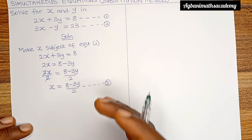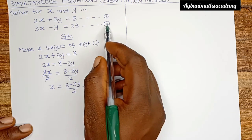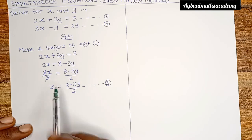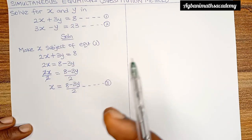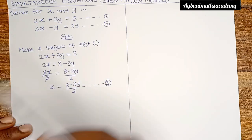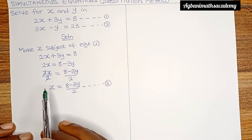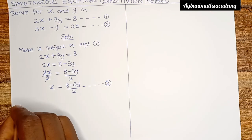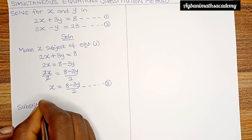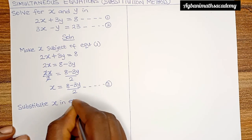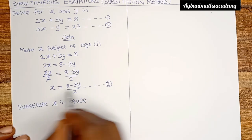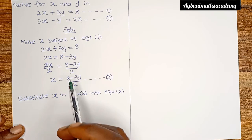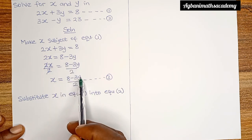The next thing we are going to do is substitute this value of x into equation 2. It is very important to note: we made x the subject in equation 1, therefore we substitute into equation 2. If we had made x the subject in equation 2, we would substitute into equation 1. Since we made x the subject in equation 1, we substitute into equation 2. So wherever we see x in equation 2, we remove it and put 8 minus 3y all over 2.